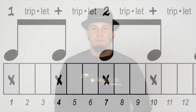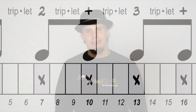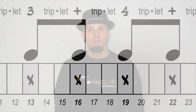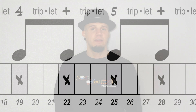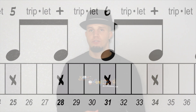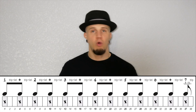Here's how I would count it out: One triplet and triplet, two triplet and triplet, three triplet and triplet, four triplet and triplet, five triplet and triplet, six triplet and triplet, seven triplet.